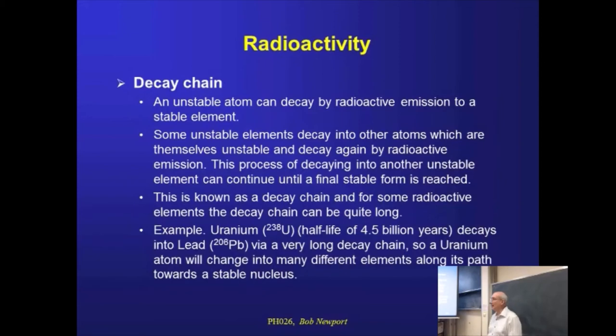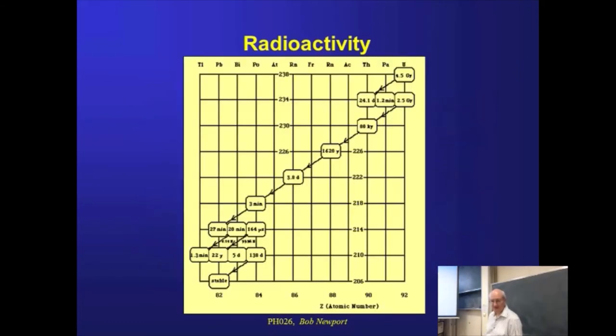Now, it's also the case that one radioactive isotope will decay into another isotope, which is itself radioactive. And you can end up with long chains until you get to something that's stable. So, a classic example is uranium-238, which has a half-life that's sort of comparable to the age of the Earth. But it decays through a very long chain of processes until it reaches an isotope of lead, which is stable, which doesn't decay anymore.